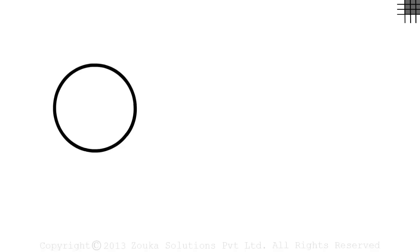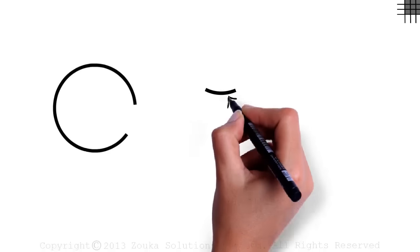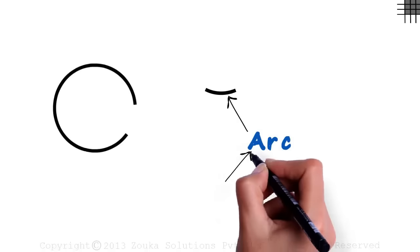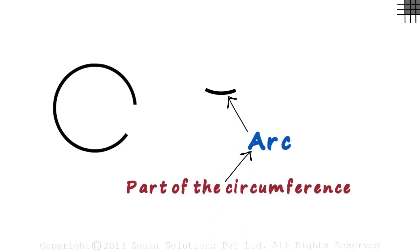Look at the circle you see on the board. If we remove a part of the boundary, this is what we get — it's called an arc. The arc's length is basically a part of the circumference of the circle. How can we calculate the length of an arc? It's a curved length and cannot be measured with a scale.